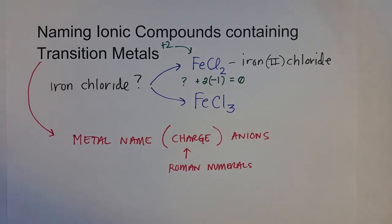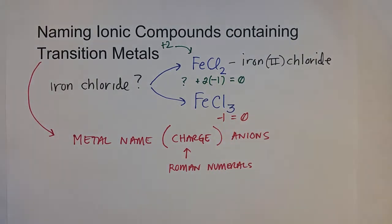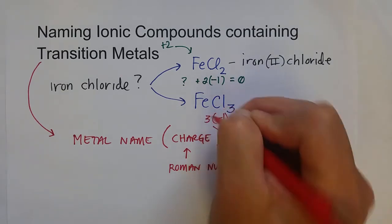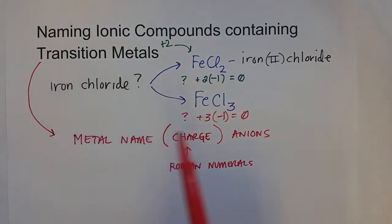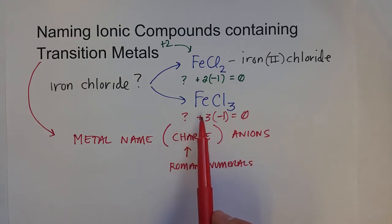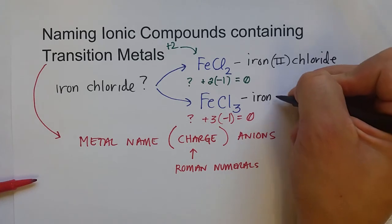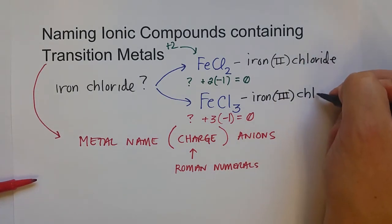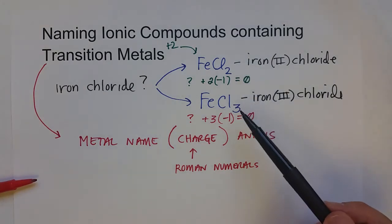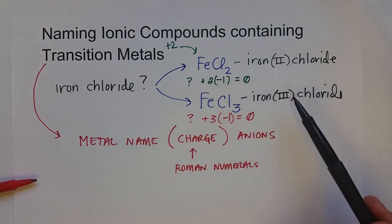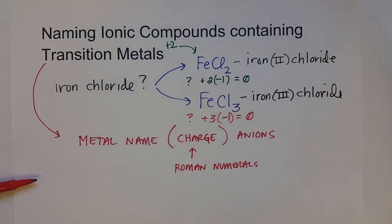For FeCl3, chloride still has a minus one charge. There are three chlorides, giving a negative three total, so the iron cation must be plus three to equal zero. Therefore FeCl3 is iron(III) chloride. That's how you distinguish them: say iron(II) chloride for FeCl2, and iron(III) chloride for FeCl3.